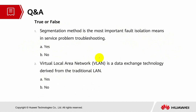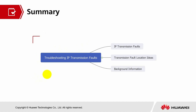In the Q&A session: the statement 'segmentation method is the most important fault isolation means in service problem troubleshooting' is false — it applies to transmission problem troubleshooting. The second question — 'Virtual Local Area Network is a data exchange technology derived from traditional LAN' — is true. In summary, we discussed IP transmission faults, fault location ideas including traceroute, ping, segmentation, and hierarchical methods, plus background information on VLAN and routing tables.